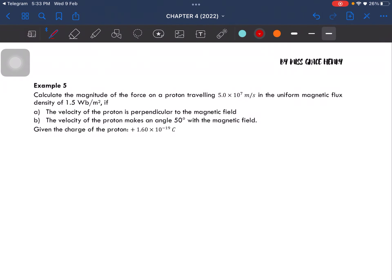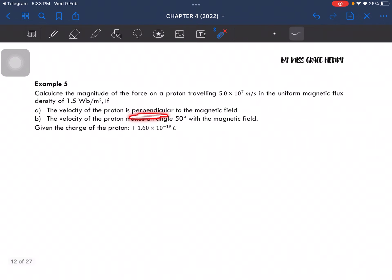Example 5: Calculate the magnitude of the force on a proton traveling at 5 times 10 to the power 7 meter per second in the uniform magnetic flux density of 1.5 Weber per meter square, if the velocity of the proton is perpendicular to the magnetic field, and the velocity of the proton makes an angle of 50 degree with the magnetic field.